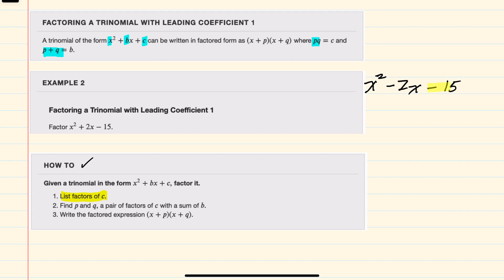Since c is -15, I can list out those factors. -15 could be either 1 and 15, or 3 and 5. In order to get a negative, these signs must be different.